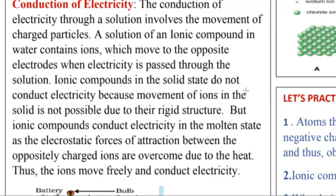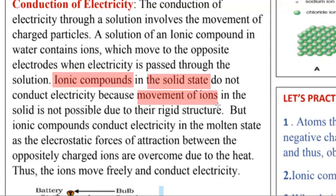Ionic compounds in the solid state do not conduct electricity because movement of ions in the solid is not possible due to their rigid structure. When ionic compounds are in solid state, the movement of positive or negative ions — anions and cations — is not possible because it is a rigid structure and they are highly attracted. So movement is not possible and electricity does not pass.